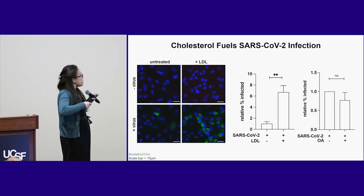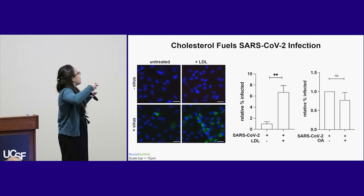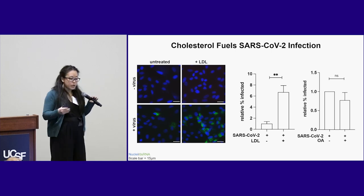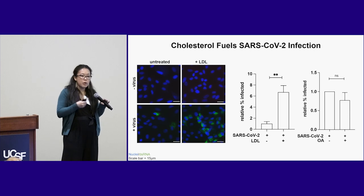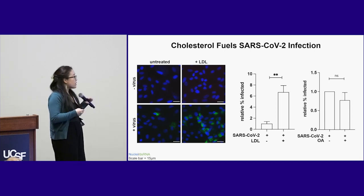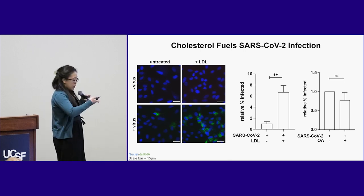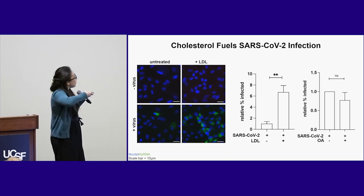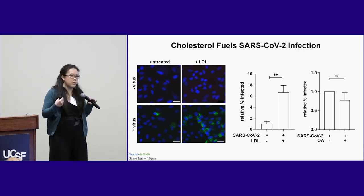On the left, we have our untreated sample plus or minus virus, and in the middle panel we have our plus or minus virus plus LDL. We're counting infected cells by double-stranded RNA positive cells in green. In the center, we quantify that in the presence of additional LDL, we get an increase in infection.